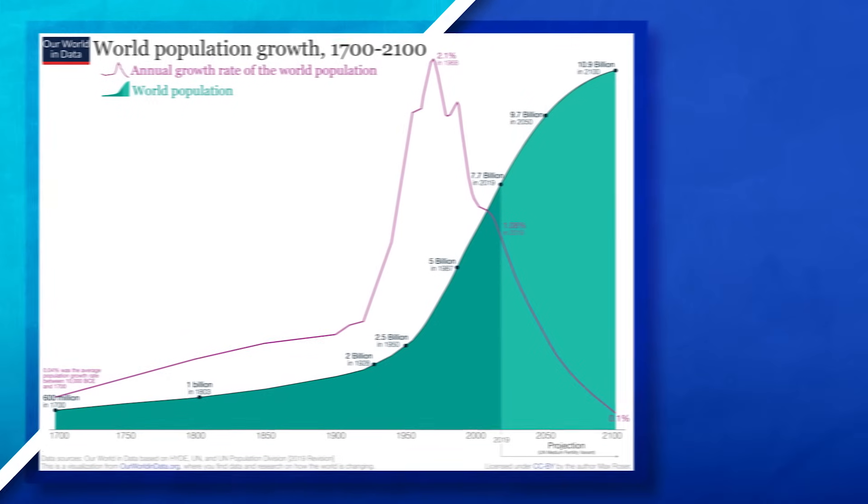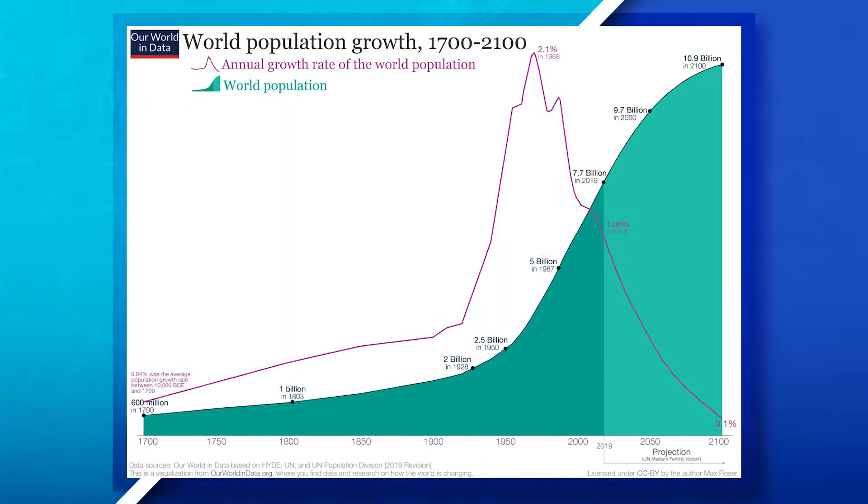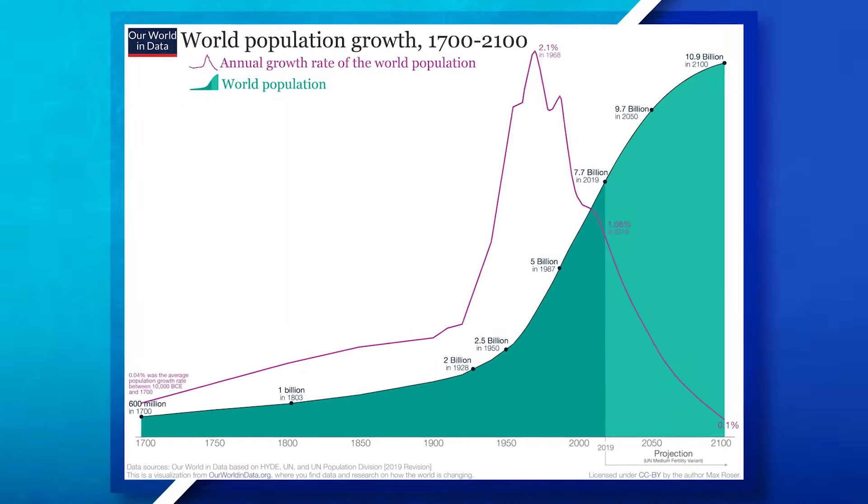Society started to see a population boom as they transitioned into stage two of the demographic transition model. During this time, we also started to see people's diets change as the amount of calories people consumed significantly increased. This was due partially to new foods that were diffusing around the world, and also due to the new food surplus created thanks to these technological advancements and agricultural practices.